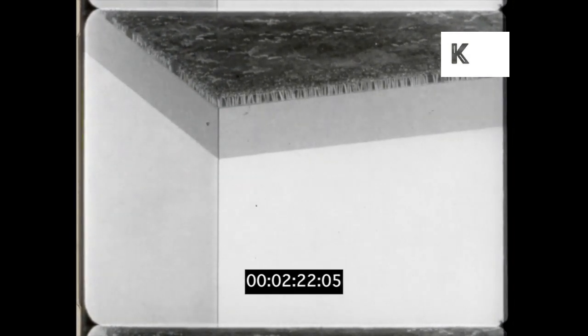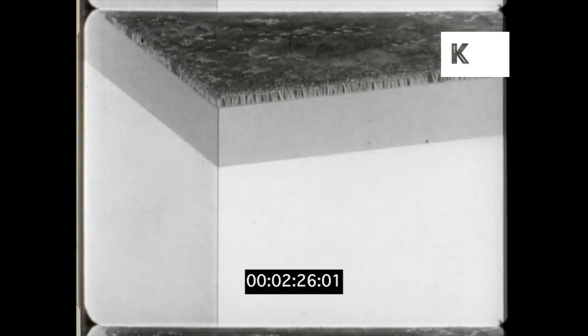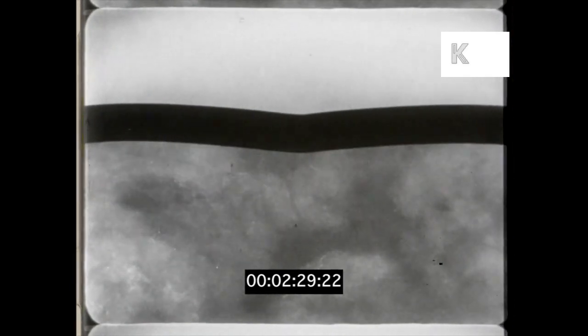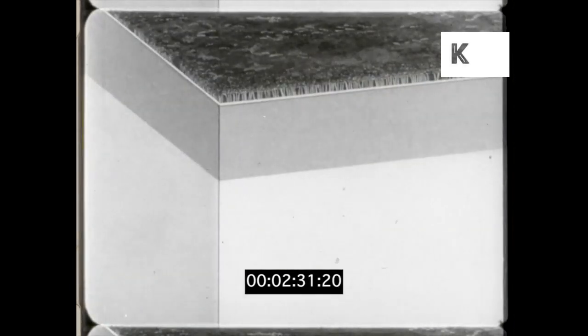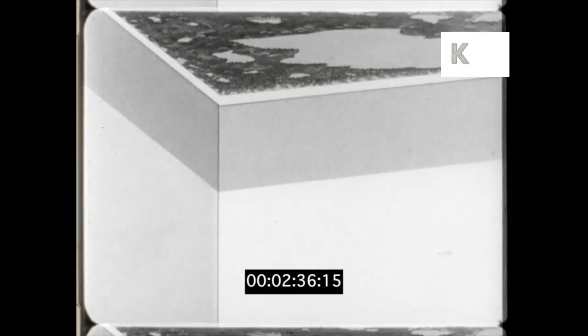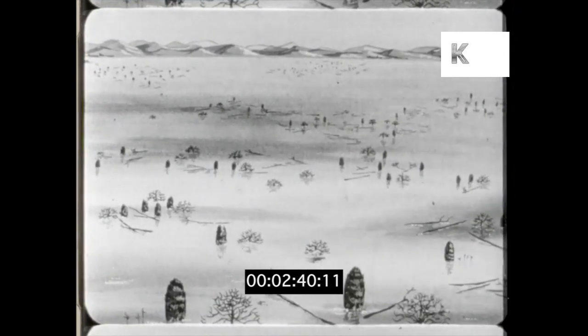As the layers sank, the peat beds grew thicker and thicker. At last the movements inside the earth caused the surface to sink a little faster. When this happened, it meant that the forest could no longer keep itself above water and all the plants and trees were drowned.